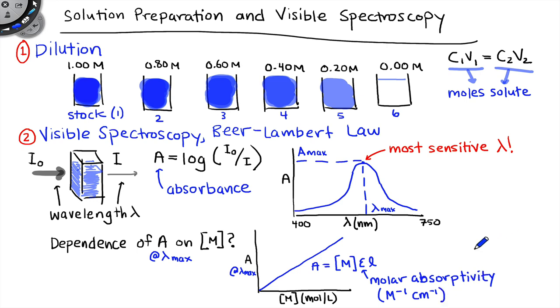Molar absorptivity provides us with an extremely convenient way to relate absorbance to concentration, because now, as long as I know the path length, which I will from my device, I can measure absorbance and calculate concentration directly using that known molar absorptivity.